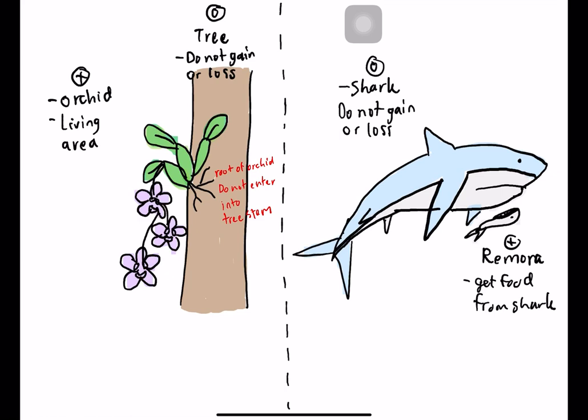The remora has specialized scales to attach to the spiny scales of the shark. When the shark eats, small debris comes out from the mouth of the shark, and the remora eats that food. So the remora gains the benefit while the shark is unaffected.